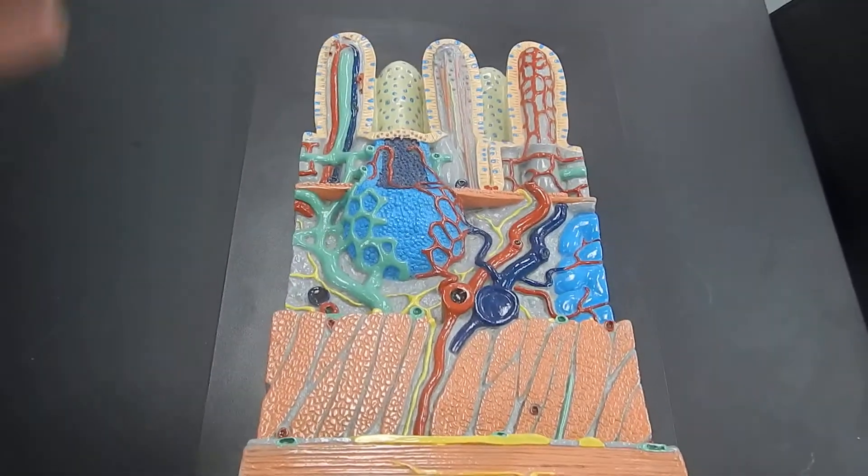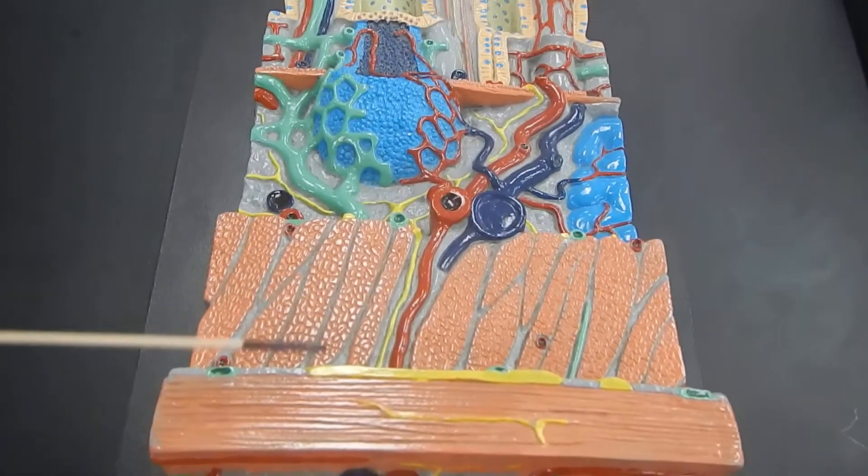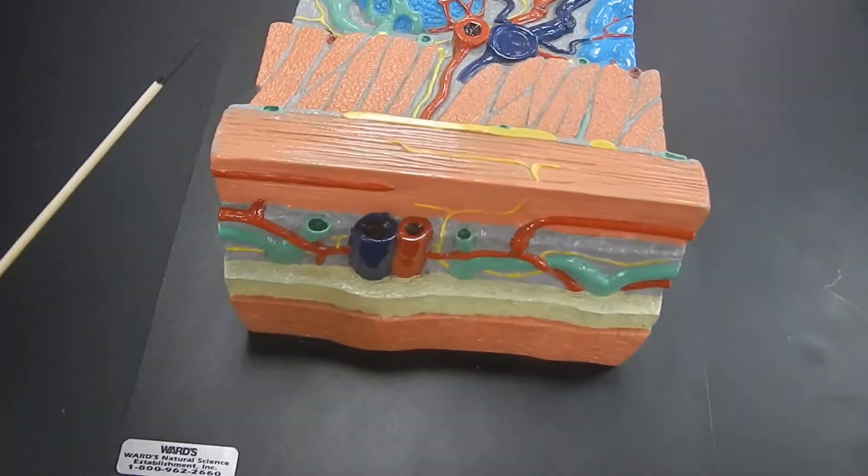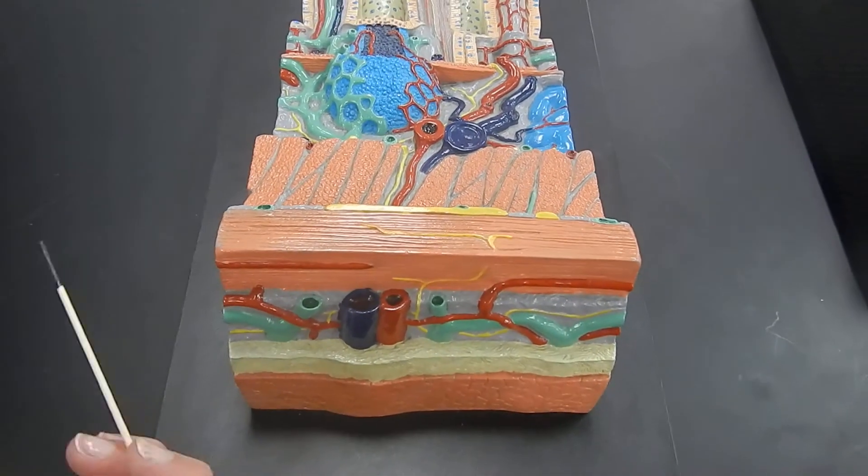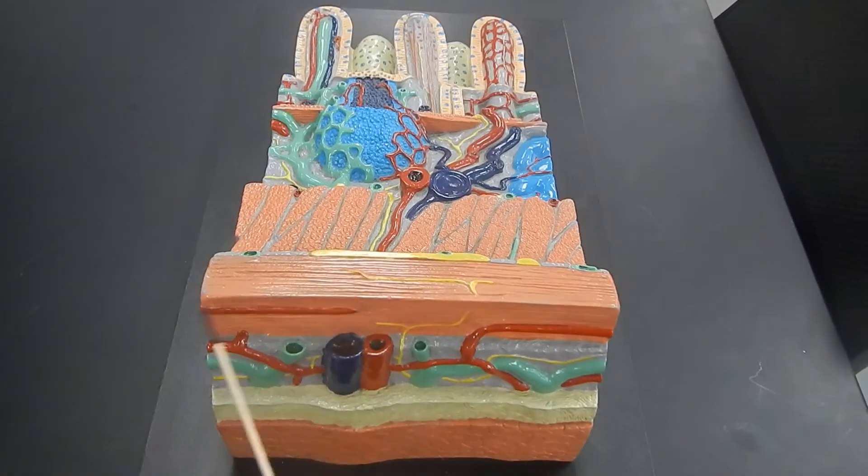Those muscle fibers are going around the wall of the intestine. This outer layer, this layer is called the longitudinal layer. Because these fibers, they are arranged lengthwise. They are going from your stomach towards your anus. This is the longitudinal layer.